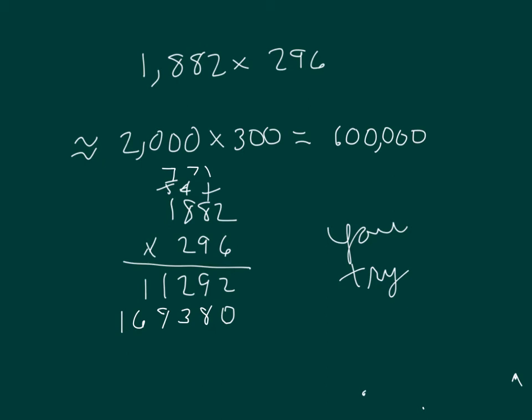And then we would have a third step as well. Working with this 2 here, that 2 is worth 200. So we place two 0s first. I place two 0s. 2 times 2 is 4. 2 times 8 is 16. 6, regroup of 1.